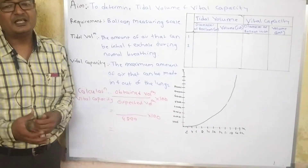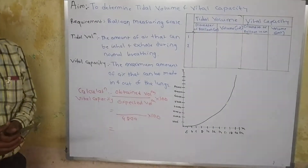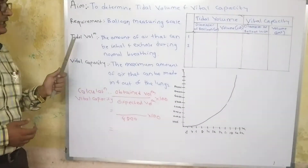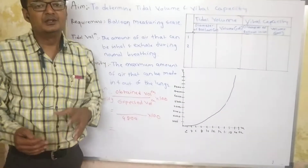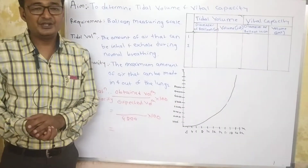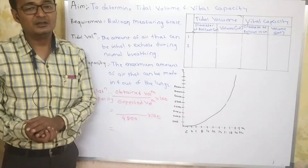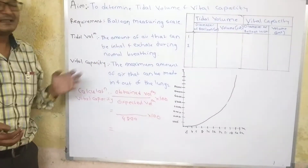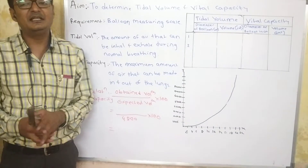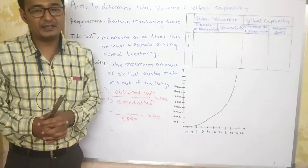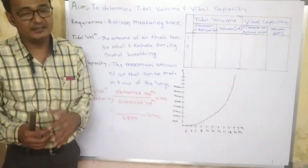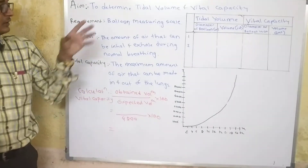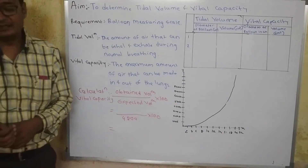The capacity of the lung is determined by the amount of air which it can hold. Tidal volume is the amount of air which moves in and out during normal or quiet respiration. Vital capacity is the maximum amount of air that can be exhaled out or inhaled in from the lungs. To calculate the tidal volume and vital capacity,